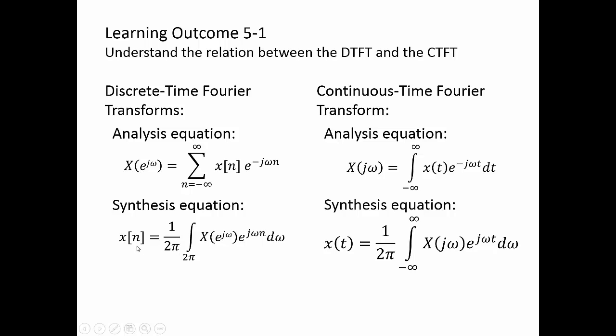Similarly, the synthesis equation: x of n instead of x of t, 1 over 2 pi for both, integral for x e to the j omega for discrete, x to the j omega for continuous, and then e to the j omega and our time variable n or t d omega. Note that our integral is only integrating over 2 pi. This is any one period 2 pi, and we'll talk about that in just a little bit.